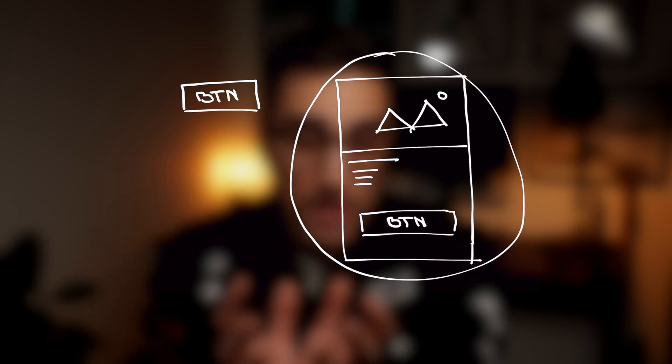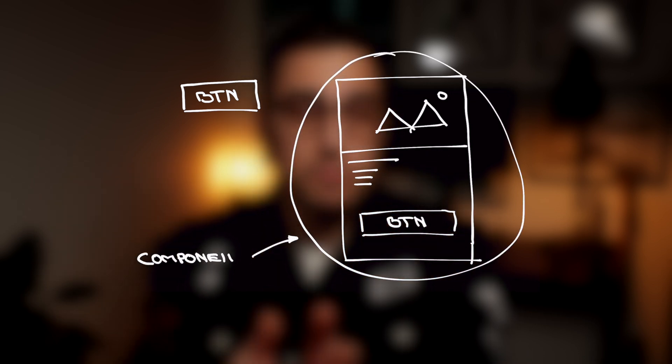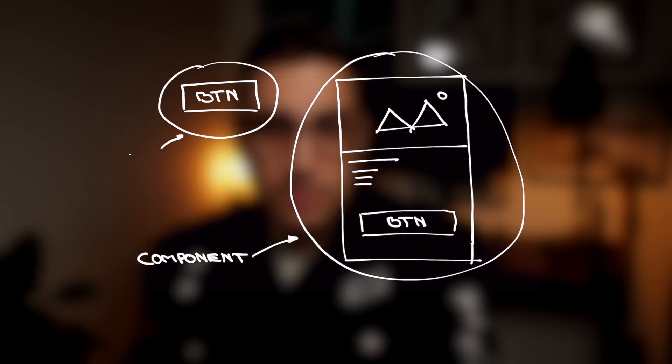But first let's answer a simple question: what the heck is a component? To keep things simple, imagine that a component is an element or a bunch of elements grouped together that retain their properties across multiple screens and multiple frames. In simpler words, you design that element once and then you just copy and paste it across your frames in Figma and it will retain the exact same properties.